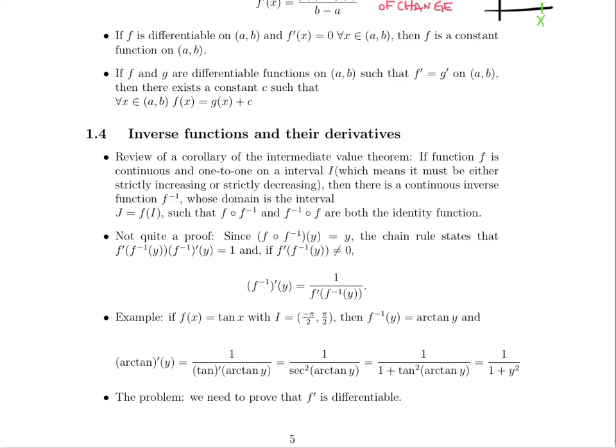Now let's take a look at inverse functions and their derivatives. Note that there's a corollary of the intermediate value theorem, which is saying that if a function is continuous and one to one on an interval, which means that it must be either strictly increasing or strictly decreasing. Well, first of all, why is that?